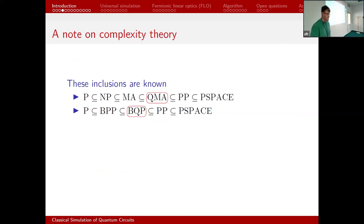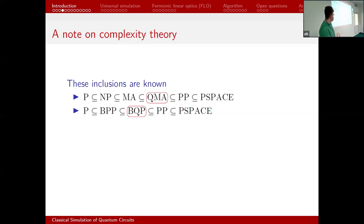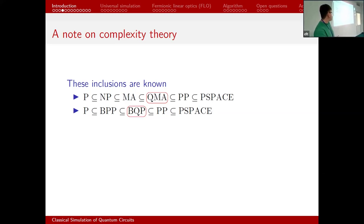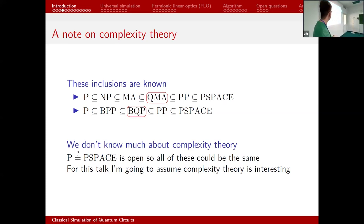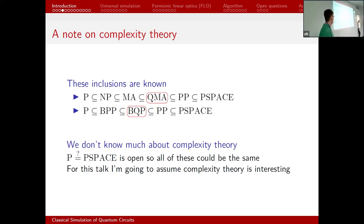Before we start properly, I want to make a note on complexity theory. Here are some known inclusions: P ⊆ NP. Some of you may have heard about the P versus NP problem. NP ⊆ QMA, and BQP are the quantumly relevant classes — QMA is the quantum equivalent of NP, and BQP is the quantum equivalent of P. Unfortunately, we don't really know anything about classical complexity theory: the question of whether P equals PSPACE is wide open. For this talk, I'm going to assume these inclusions are strict, just because it's really hard to talk about this stuff otherwise.